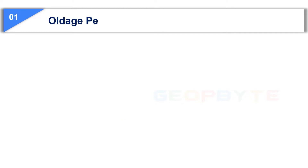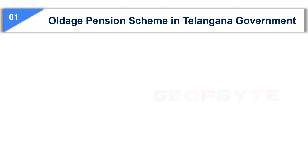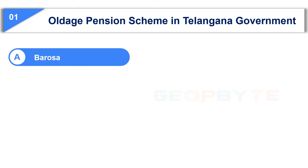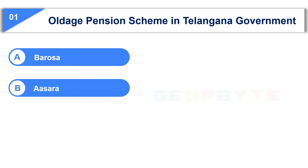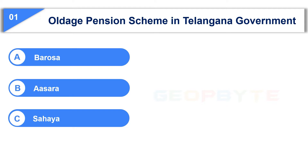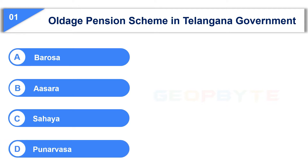The first question is: Old Age Pension Scheme in Telangana Government. Option A: Barosa. Option B: Asara. Option C: Sahaya. Option D: Punarvasa.